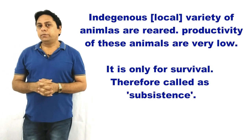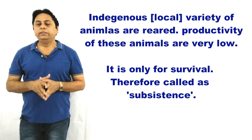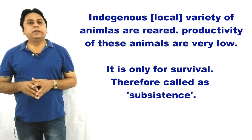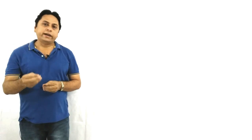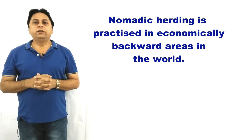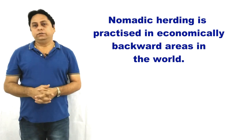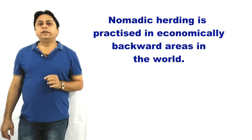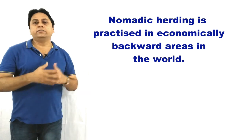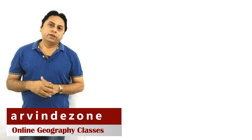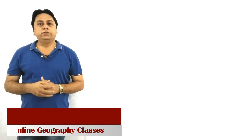The animals which nomadic herders keep are of indigenous variety, meaning productivity is very very low. These people sell products in the local market and survive on a very small profit. It can support only a very small size of population, and is mostly done in economically very backward areas. Therefore, nomadic herding is practiced in backward or less developed areas of the world — for example, the tropical Sahara, the rainforest of the Amazon Basin, northern Canada covered with ice, and northern Russia which is very cold.